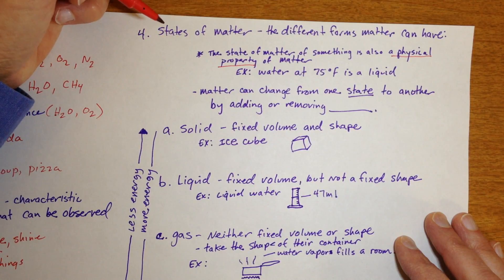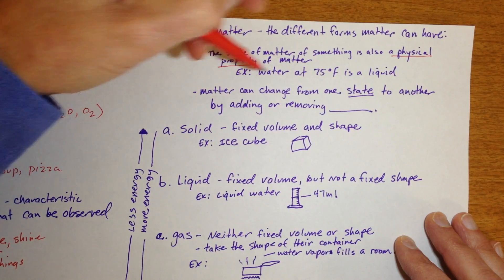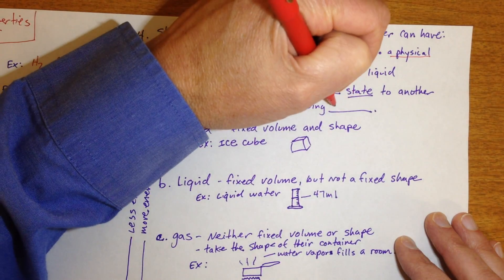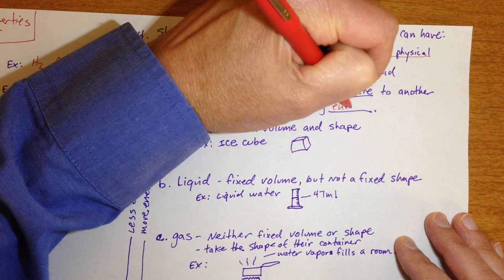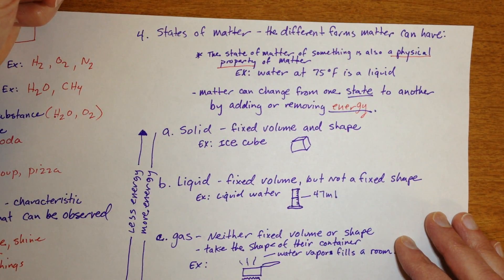At zero degrees and below, water is a solid. That's the state of matter. And matter can change from one state into another by adding or removing energy. That's basically the difference between the different states of matter is how much energy the molecules of that substance has.